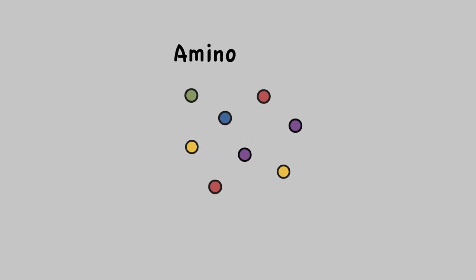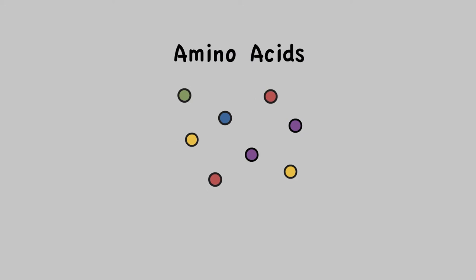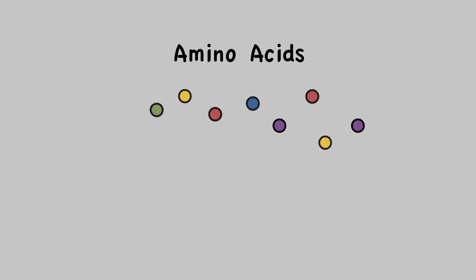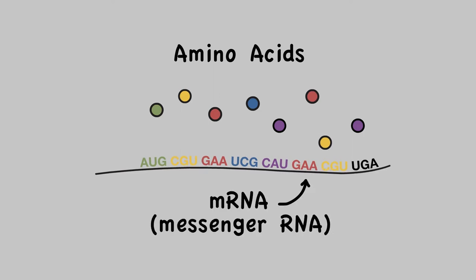But how are proteins made? Each protein is built of a chain of amino acids. Amino acids are basically protein ingredients. They get linked together in a specific order following a recipe. That recipe comes in the form of something you may have heard of — mRNA, which is short for messenger RNA, because it encodes the message that will get read into a protein.